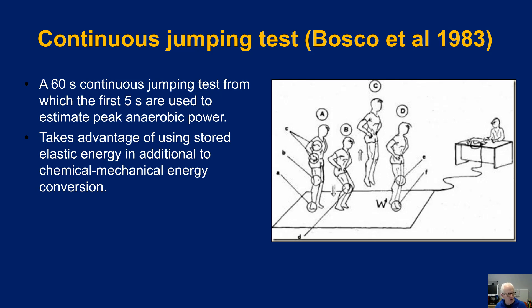In any form of exercise there is also stored elastic energy, derived primarily from eccentric force generation. This is really important because a muscle goes through different kinds of action: shortening and lengthening, as well as isometric actions where the muscle doesn't change length. Under concentric conditions the muscle shortens; under eccentric loading the muscle elongates — and critically, it does so under tension.